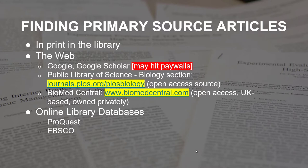One way on the web you can find primary sources would be using Google or Google Scholar. Now even though Google and Google Scholar are free and easy to use, you may hit paywalls where the website will ask you to pay extra money to access the full article.